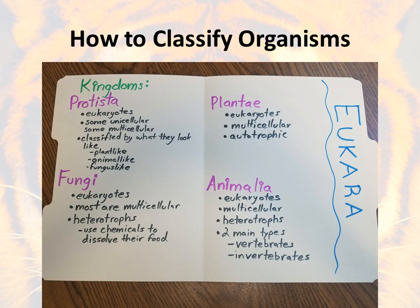For the Plantae kingdom, those are eukaryotes, so those cells have a nucleus. They are multicellular and they are autotrophic, so they build and convert energy from things like sunlight. The Animalia kingdom is also eukaryotes — those cells have a nucleus. They are multicellular and they are heterotrophs, so they need to get their energy from other organisms. There are two main types of animals: vertebrates, which are creatures that have backbones, and invertebrates, which are creatures that do not have a backbone.